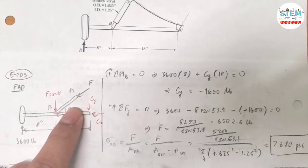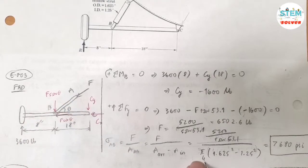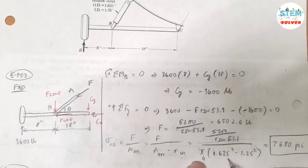And this is a circular strut, so the area of the circular is π over 4 times the distance squared, the diameter squared. So I have π over 4 times the outside diameter squared minus π over 4 times the inside diameter squared. Doing this calculation, I got 7680 pounds per inch squared, which is also can be expressed as psi.